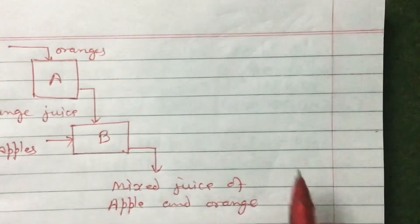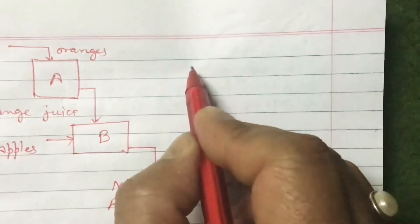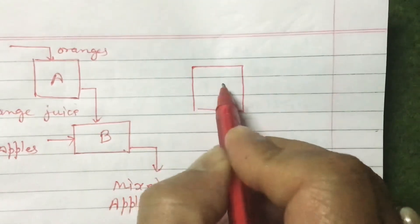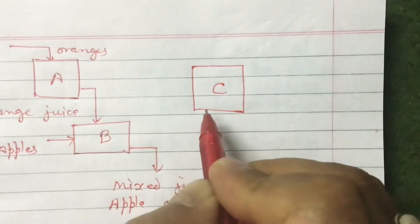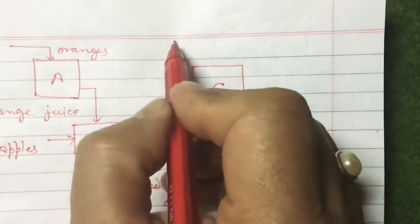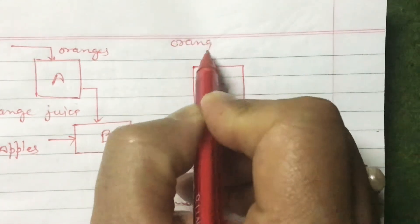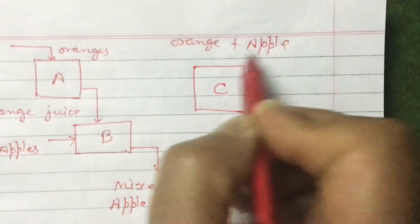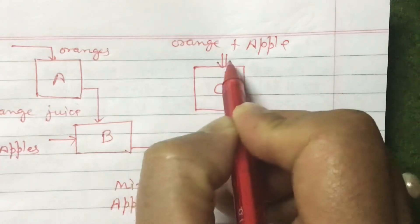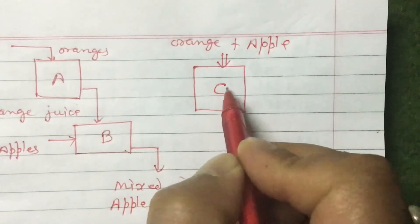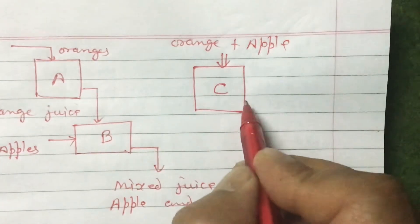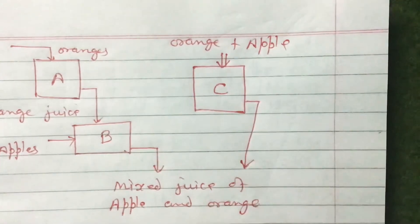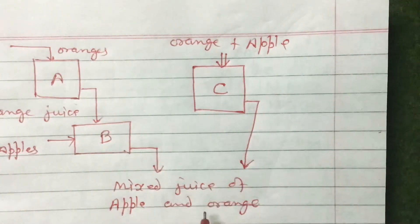Let us say there is a third machine, Machine C. If you put orange plus apple at once into Machine C, it will grind them and directly produce the same product — mixed juice of apple and orange.